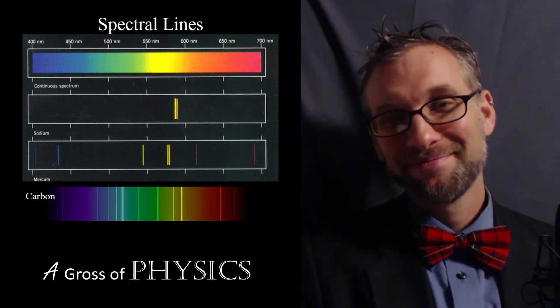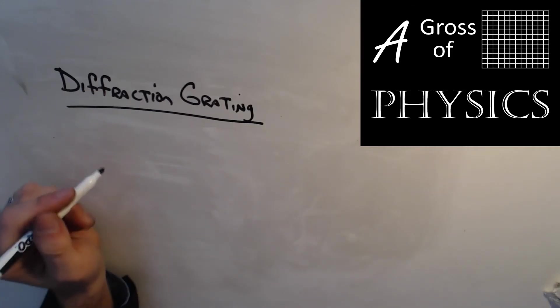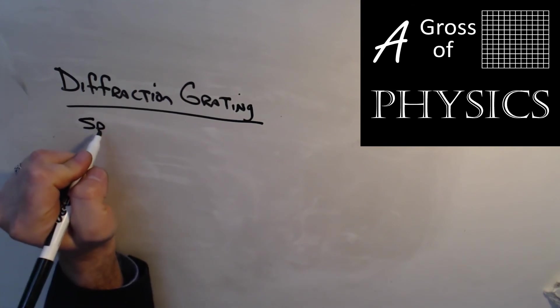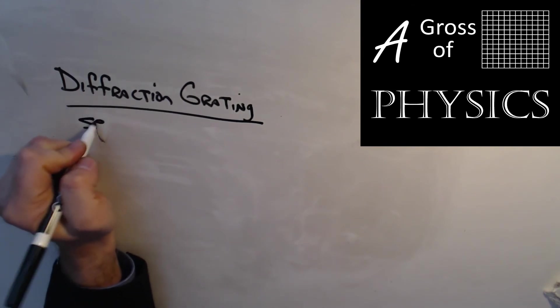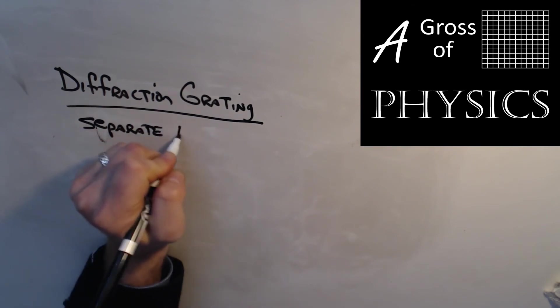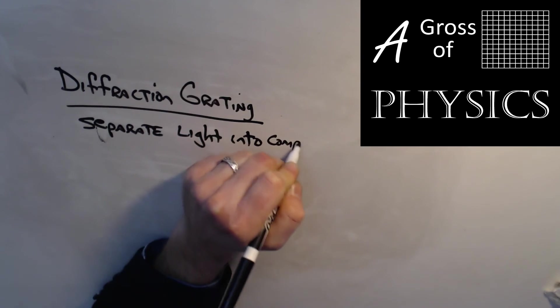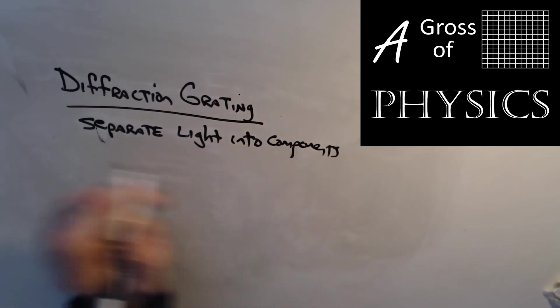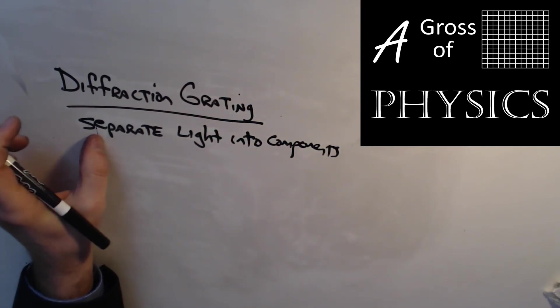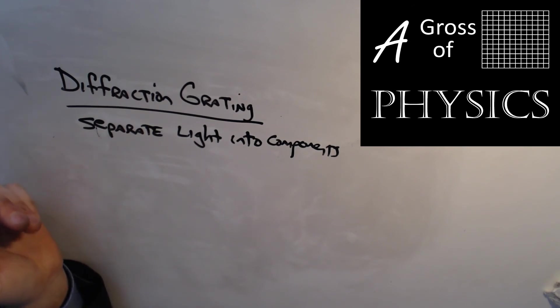Thank you. Now diffraction grating will allow us to separate light into its components. We use it to determine what elements are included in light coming from the sun or other stars. It allows us to use the bright line spectra.